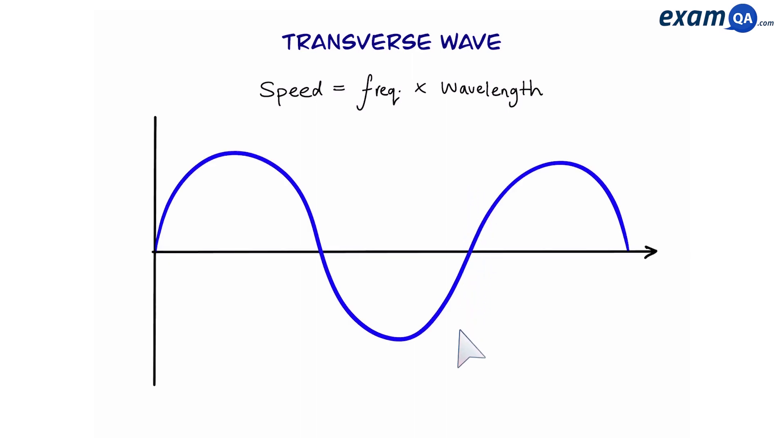Okay, so here we have a transverse wave and we're going to label the axis displacement on the y-axis and distance on the x-axis. Now remember distance is measured in meters. So we can see that on this wave the top parts are known as crests or you can call them peaks. And the bottom point is called the trough. The height of a wave is known as the amplitude, and it's the distance from the baseline, which is the line in the middle, to the crest or trough.